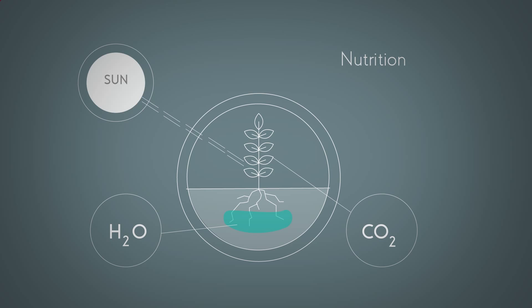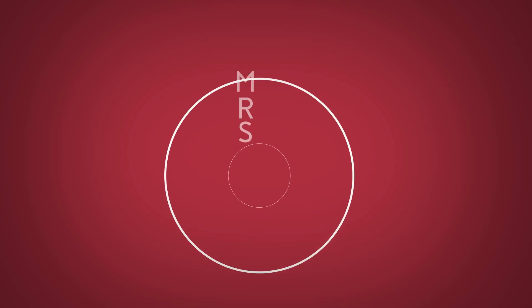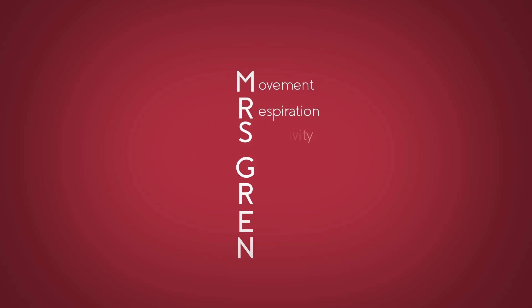So there you have it, the seven life processes. You can remember them easily by learning the phrase, Mrs. Grenn. Movement, respiration, sensitivity, growth, reproduction, excretion, and nutrition.